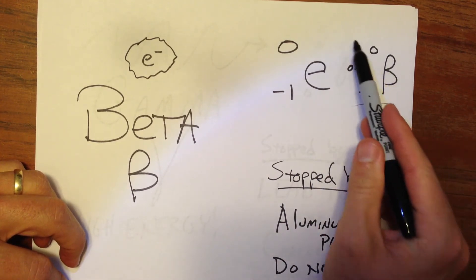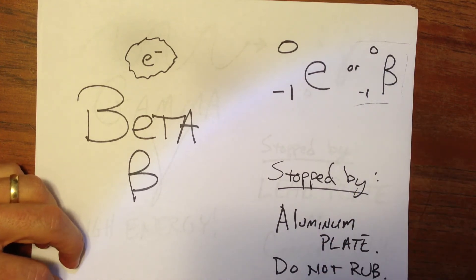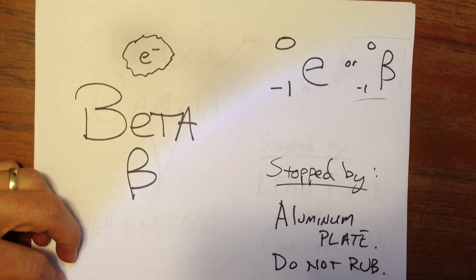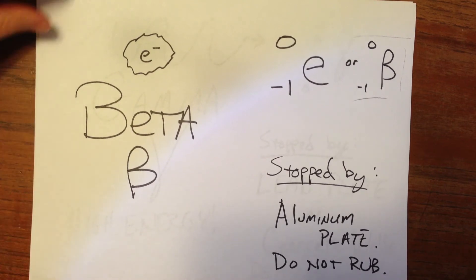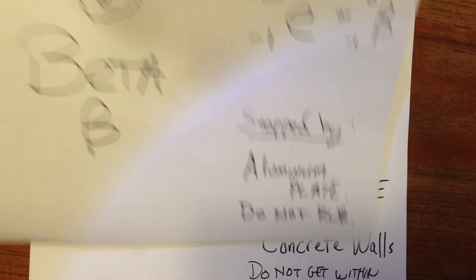Whereas sometimes certain books will show it that way. It's the same thing. They just use the beta symbol. So beta particles are a little bit harder to stop. They can be stopped by an aluminum plate, so you don't want to rub up against one. They'll go into your skin and could cause some sorts of damage.